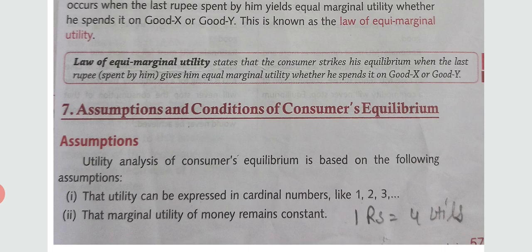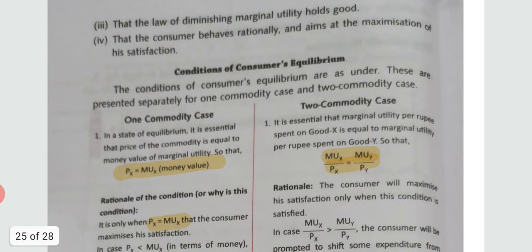For example, if you consume the first cup of tea you get five utiles of satisfaction, and the second cup gives four utiles — these can be expressed in numbers. The second assumption is that the marginal utility of money remains constant. For instance, one rupee equals four utiles, meaning spending one rupee gives four utiles of satisfaction.